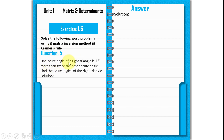One acute angle of a right triangle is 12 degrees more than twice the other acute angle. Find the acute angles of the right triangle.